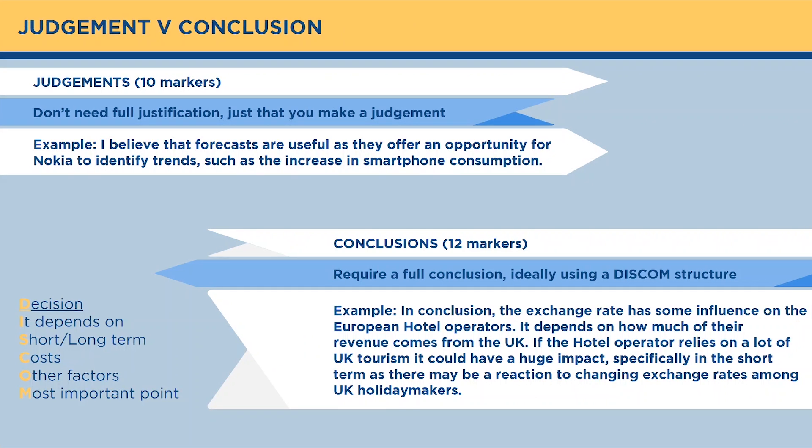We need to know the difference between judgments and conclusions. For 10 markers, you don't need a full justification — just make a judgment. An example for the 10 mark Nokia question: 'I believe that forecasts are useful as they offer an opportunity for Nokia to identify trends such as the increase in smartphone consumption.' For the 12-marker conclusion, I get my students to use a DISCO M structure. DISCO M stands for: Decision — the only one you need every single time, so you answer the question. Then use two of the other options as additional ingredients to fulfil your conclusion.